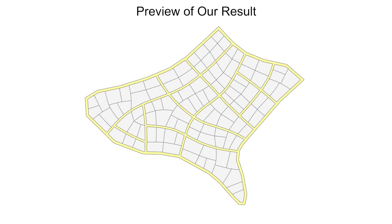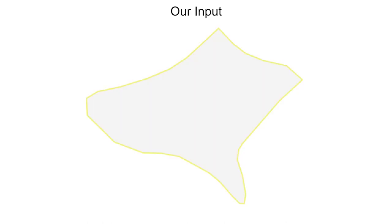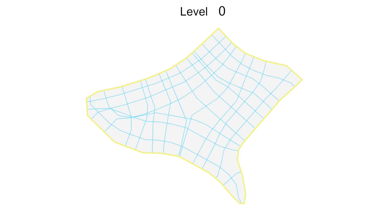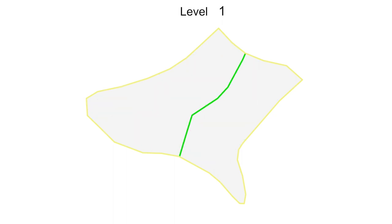We present a hierarchical approach to co-generate parcels and streets from a user-specified polygonal land shape. We compute multiple streamlines based on a parcel shape and choose one streamline with the highest quality score to partition the parcel. We perform this binary partitioning hierarchically to generate new parcels.